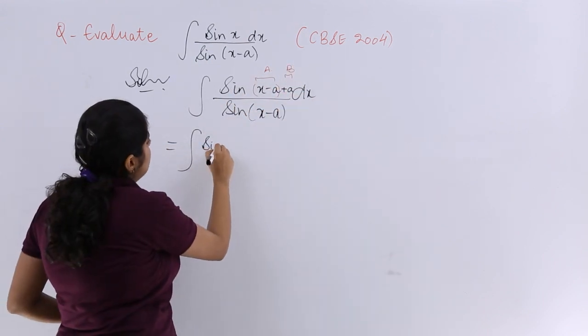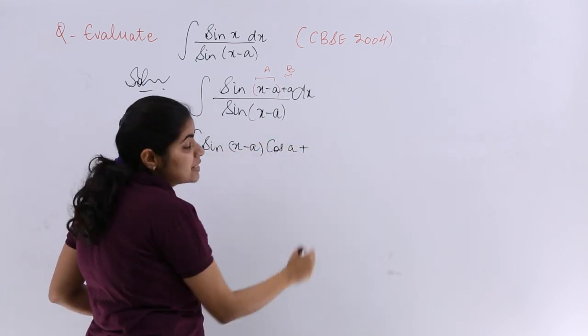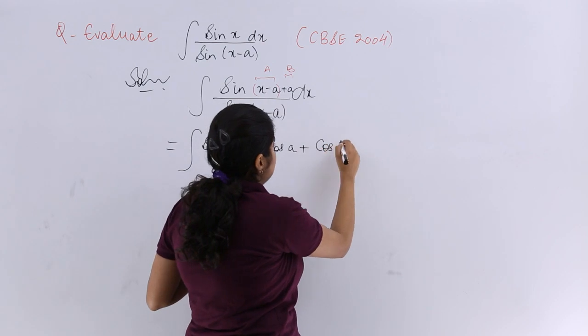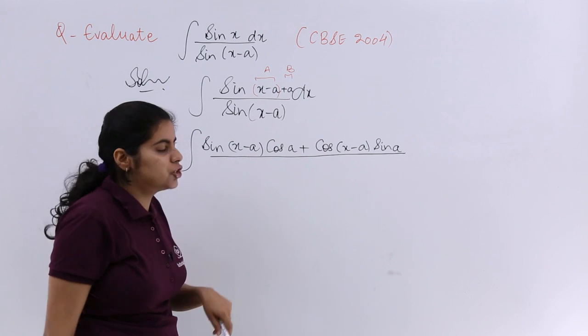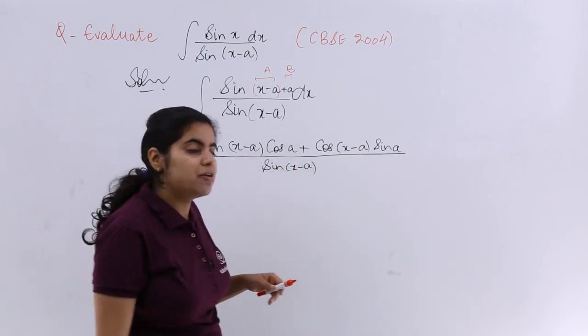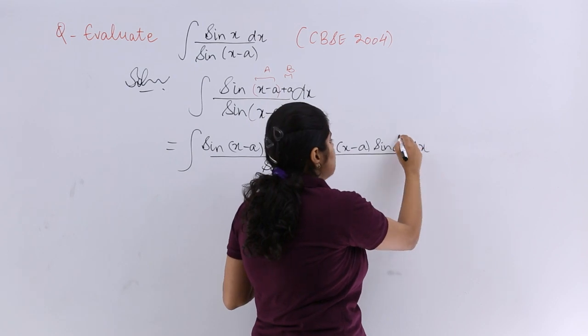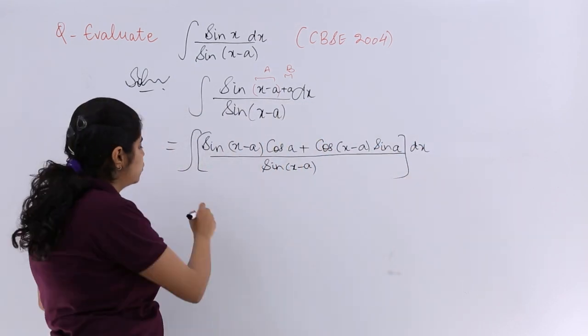What is sin(a+b)? It is sin a cos b plus cos a sin b, whole upon - does not change. It is nothing but sin(x-a) and everything with respect to x. So that is the further part of the question and solution now.